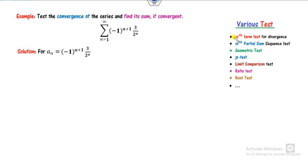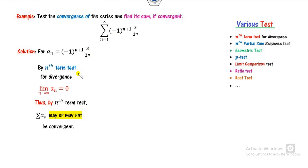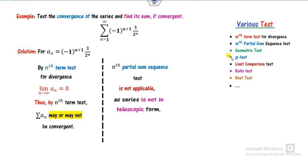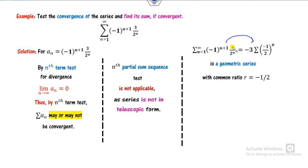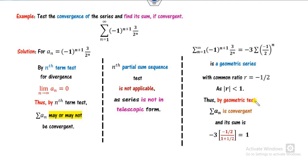Look at this next example. Can the nth term test be applied? The limit as n approaches infinity of 3 over infinity is 0, so the nth term test is not applicable. The nth partial sum sequence is also not applicable since it cannot be written as a telescopic series — both methods fail. Can this be a geometric series? Yes — factoring out -3, this becomes a GP series with common ratio -1/2. Since |r| = 1/2 < 1, by the geometric test it is convergent. The sum is -3 times the GP series starting from n=1, with first term -1/2, giving the correct answer.